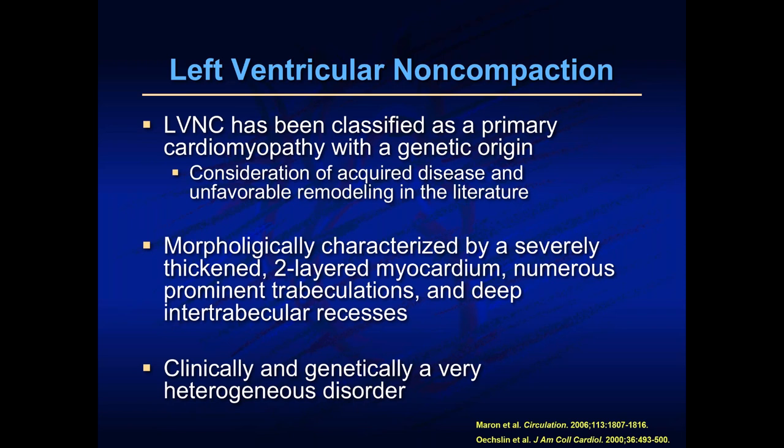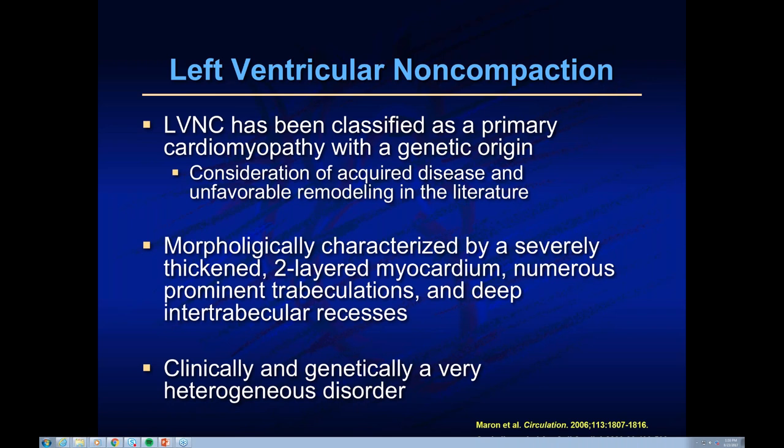LVNC has been classified as a primary cardiomyopathy with a genetic origin, though acquired disease and unfavorable remodeling have also been reported. It's composed of a severely thickened two-layered myocardium with numerous prominent trabeculations — finger-like processes — and deep intertrabecular recesses. It's clinically and genetically a very heterogeneous disease. I describe it to patients like the stalagmites in a cave: those finger-like projections jutting out are what we see in non-compaction.